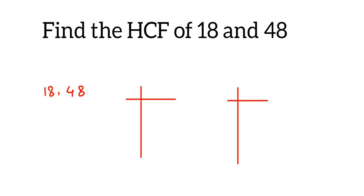First we have 18. I'm going to take only prime numbers. 2 is a prime number and we can divide 18 by 2 — two 9s are 18. Again we have 9; it doesn't go in the 2 times table, so we take 3 — three 3s are 9.